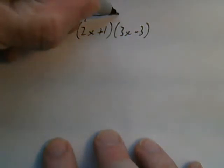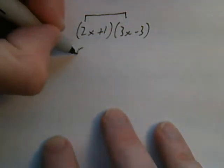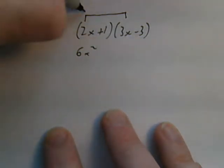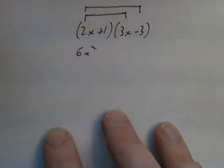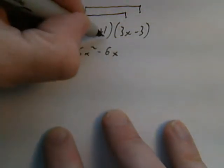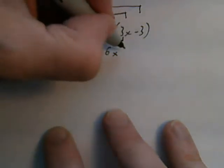First, 2x times 3x: 2 times 3 is 6, x times x is x squared. Outside, 2x times negative 3 is negative 6x. Inside, 1 times 3x is 3x.